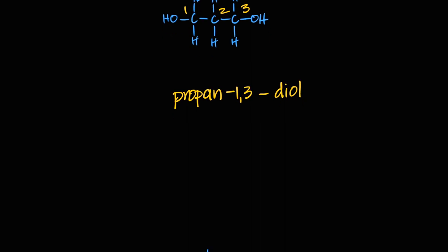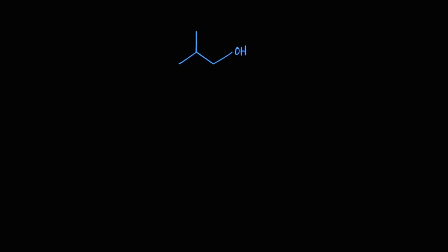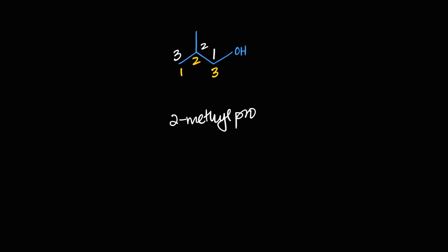Let's look at this branched alcohol drawn in skeletal formula. The OH gets carbon number one, giving the numbering sequence one, two, three. It's a three-carbon chain with an alcohol on carbon one and a methyl on carbon two — all single bonds. This one is 2-methylpropan-1-ol.